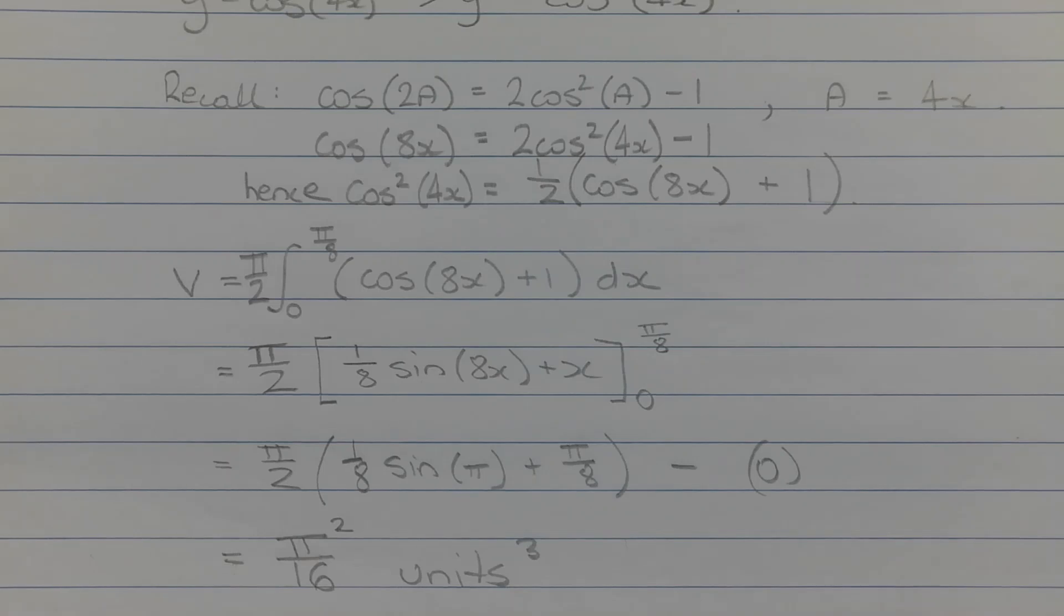Performing the integration, we get pi over 2 times 1 over 8 sine 8x plus x from x equals 0 to x equals pi over 8.